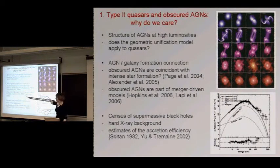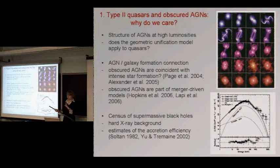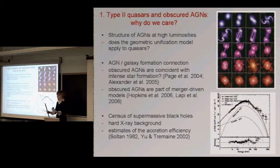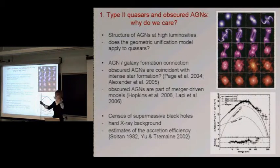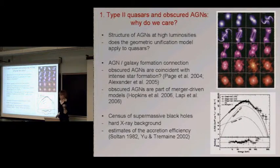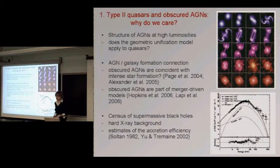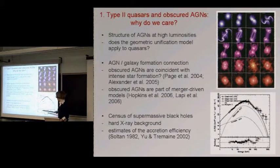This picture is from papers by Hopkins et al. on merger-driven models of joint galaxy-AGN formation. They start with very gas-rich galaxies, merge them, and have some prescription for feedback — the AGN outputs some amount of energy, some fraction of that gets coupled to the gas, and then they follow the formation of the galaxy and the apparent luminosity of the AGN. This is also the spectrum of the X-ray background and one of the models that reproduces it, which requires a lot of obscured AGN.